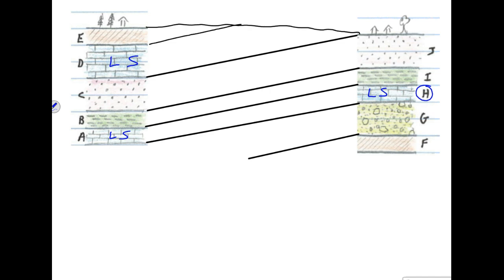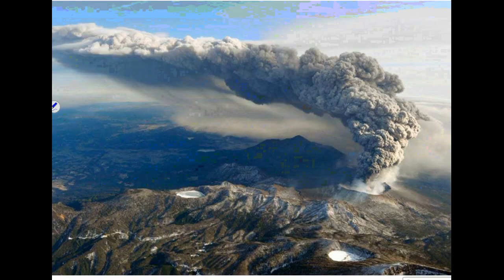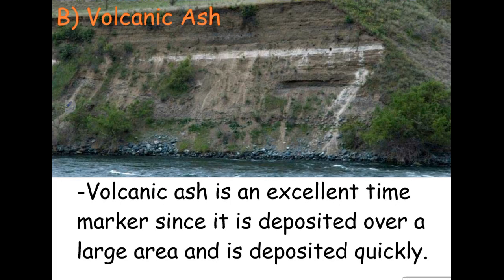We're going to get a helping hand to correlate layers, and one of the things that helps us a lot is volcanic ash. If a volcano erupts with a tremendous amount of volcanic ash into the atmosphere, the wind moves that ash to very far places — it's not just going to land around the volcano, but move geographically over a very large area. That ash eventually falls to the ground, lands in lakes, rivers, and even the ocean, forming a layer we can use to match up rock layers. Here we see a layer of volcanic ash in Montana, and if we find that same volcanic ash in other layers, we can correlate those layers.